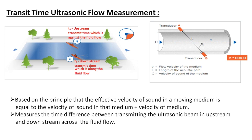This can be understood by a simple analogy: consider two persons on the two banks of a river crossing to the other side. The person crossing in the direction of the flow (downstream) takes less time compared to the person going against the flow.